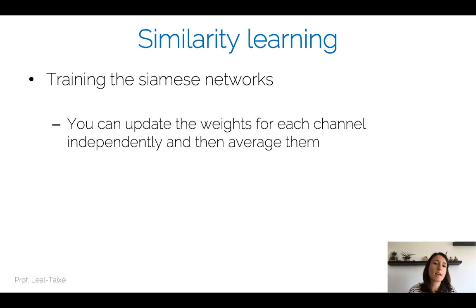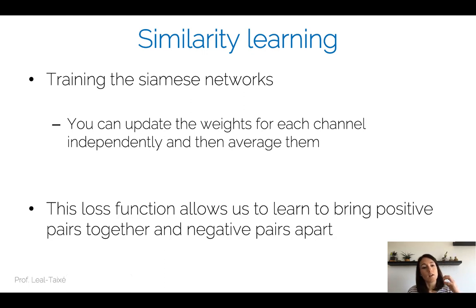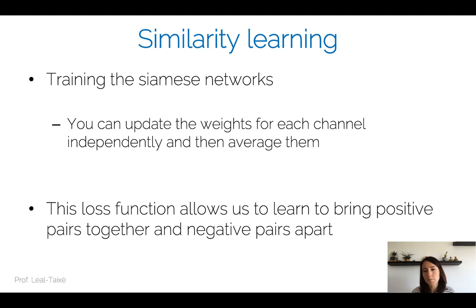To train Siamese neural networks, the weights for each branch are updated independently from their respective losses, then averaged. With the contrastive loss, we've learned to bring positive pairs together and push negative pairs apart. But can we do better? What are the problems with the contrastive loss? This leads us to the formulation of the triplet loss.